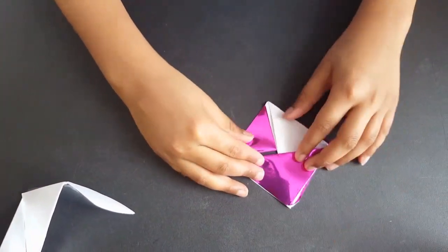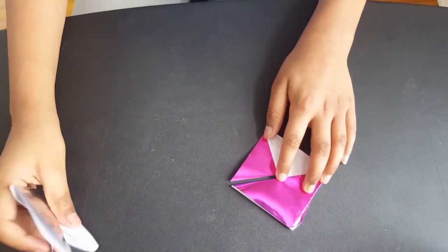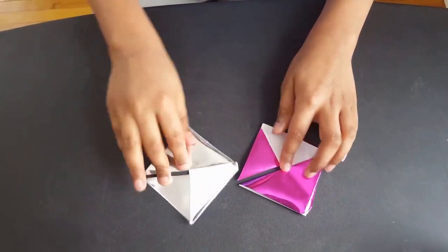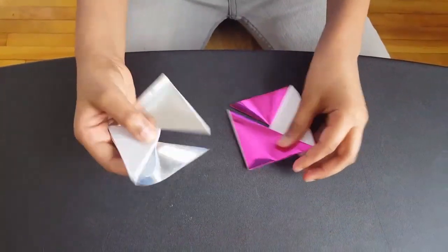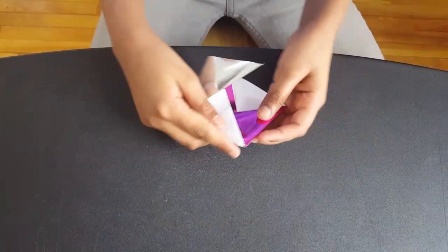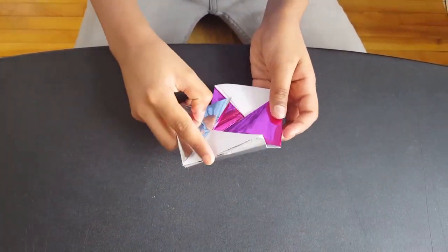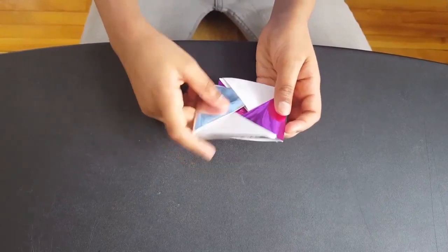The first piece has to be like this. The second piece has to be like this. So first you have to put this pocket inside of this pocket like this. Then you have to put this pocket inside of this pocket like this.